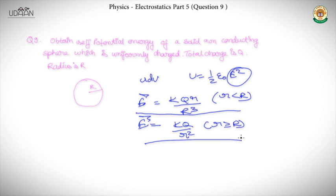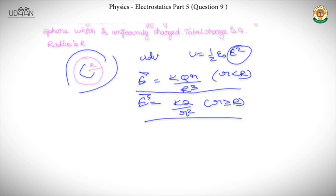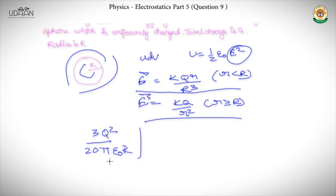Unlike the hollow sphere where inside had no electric field and thus no stored energy, for the solid sphere we must consider both the inside and outside regions. The total self-potential energy works out to 3Q²/20πε₀R. This is the total self-potential energy of the solid sphere — try solving it yourself and verify the answer.